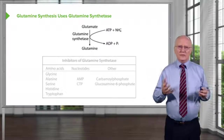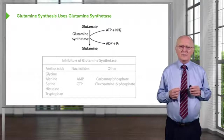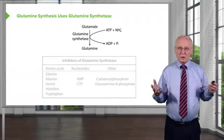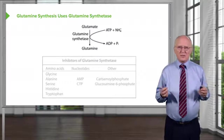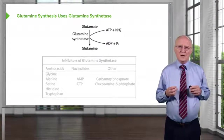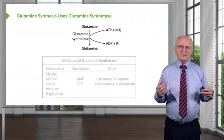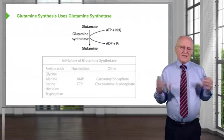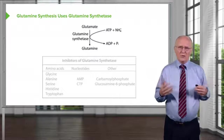Glutamine is made in a simple reaction from glutamate, as we see here — we've already seen how glutamate is made. The enzyme that catalyzes this reaction is glutamine synthetase, and it requires ATP. The nitrogen source here is ammonia, or in this case ammonium ion, which is the same in aqueous solution. This ammonium ion is produced as a byproduct of the breakdown of other amino acids. Importantly, ammonia is toxic.